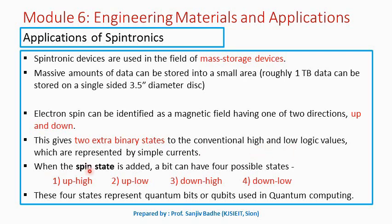But with the introduction of spin states, a bit can have four possible states: up-high, up-low, down-high, or down-low. These four states represent quantum bits, or qubits, and these qubits are used in quantum computing. So Spintronics finds an application in quantum computing as well, and quantum computers will be the very fast computers of future generations.